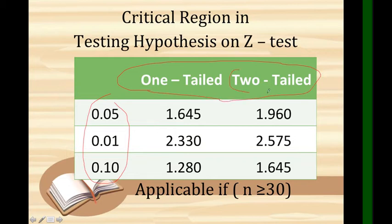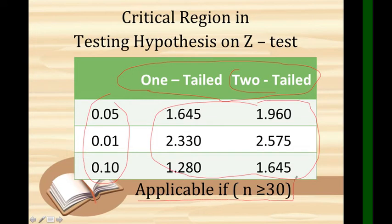These numbers are the critical values that we will use in the decision making, whether to accept or reject our computed value, the HO or the HA. Also remember that Z-test is only applicable if the number of population is greater than or equal to 30.